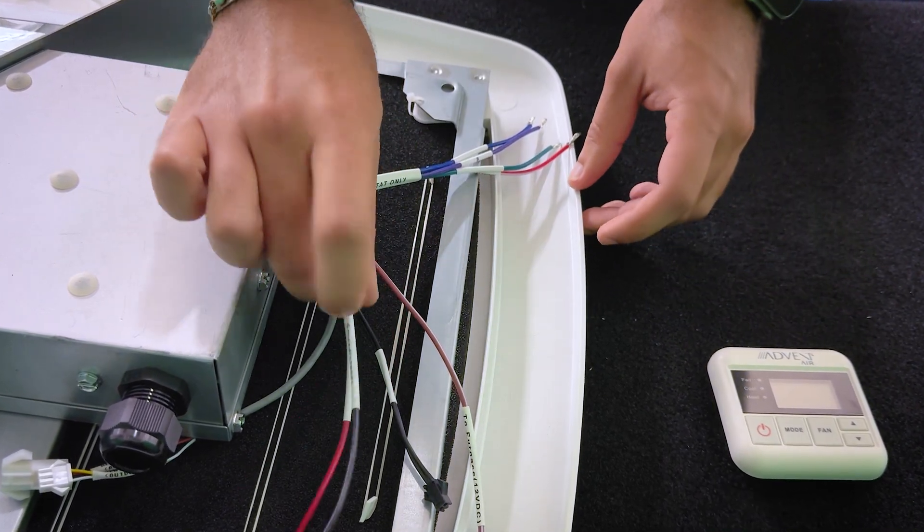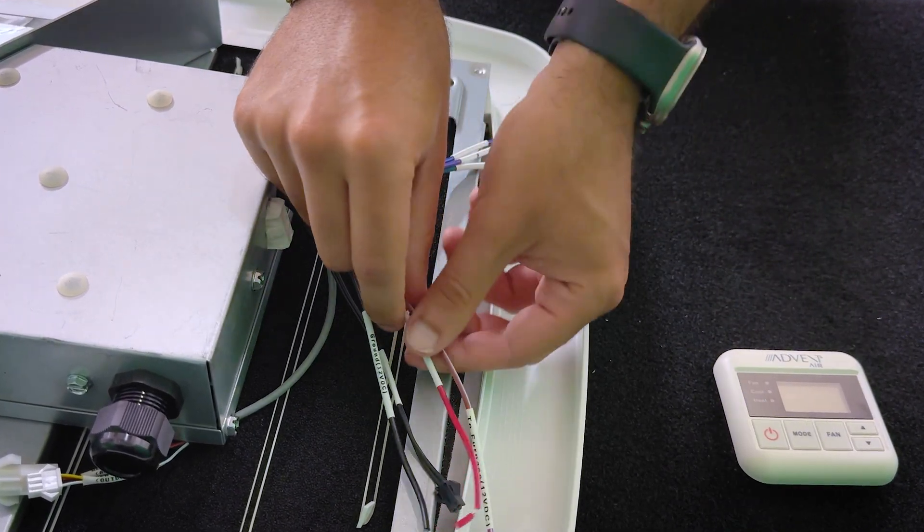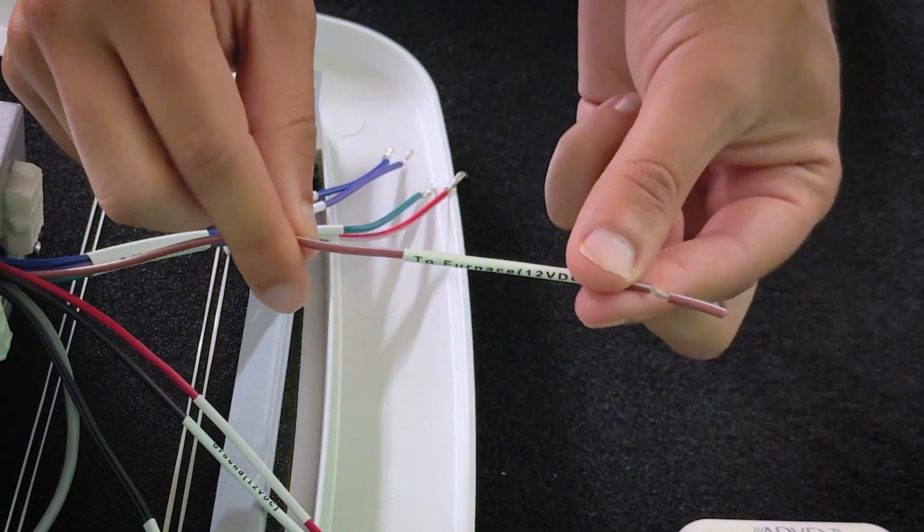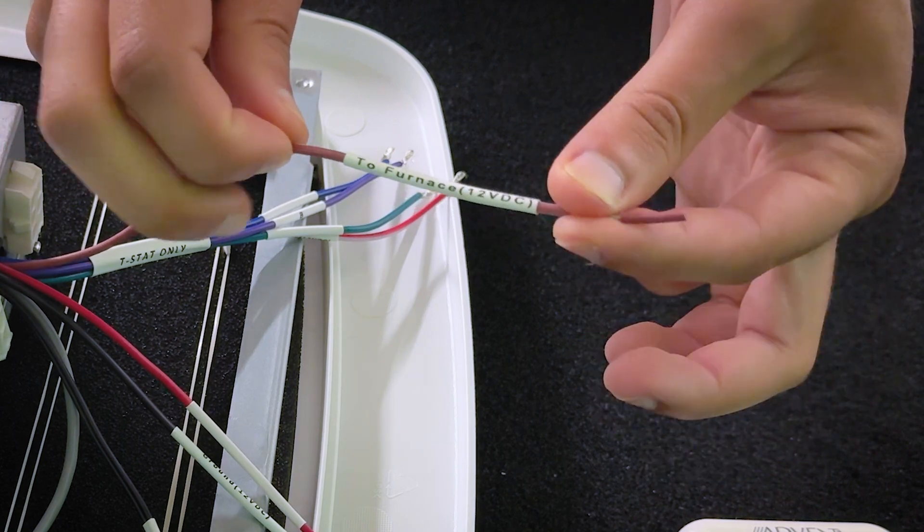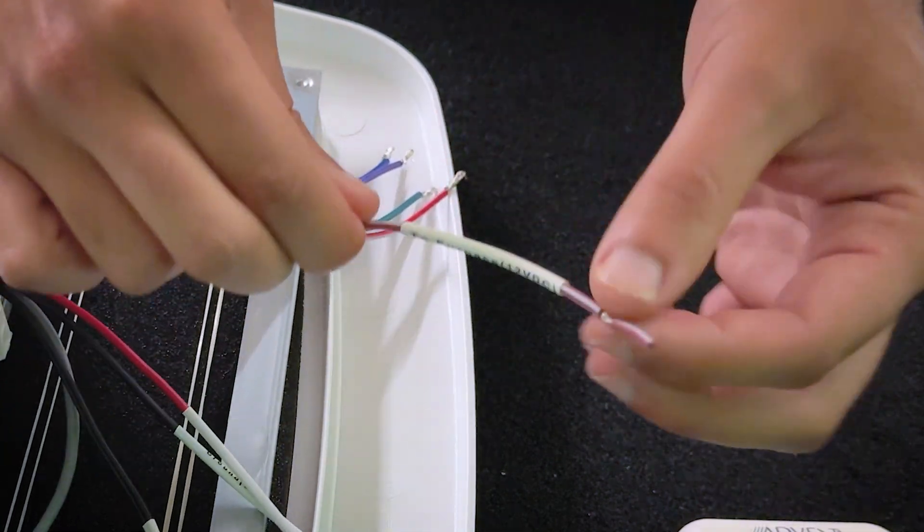Once that's connected, you can then take a look at your furnace wire. If you have a furnace, this is going to go to the negative side or the not hot side of the furnace, and it's just a brown and white wire.